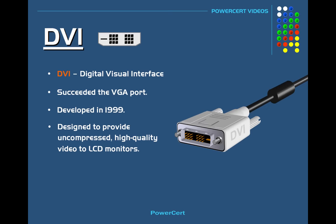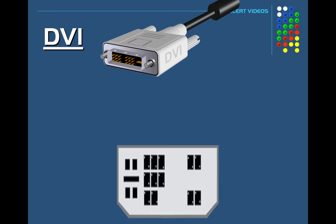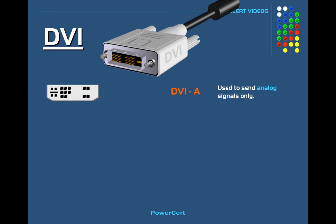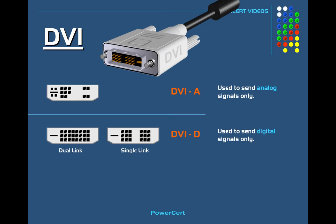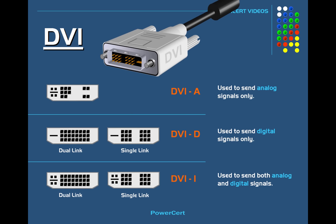There are three different versions of the DVI standard. There's DVI-A, where the A stands for analog, and this is used to send only analog signals. There's DVI-D, where the D stands for digital, and this is used to send only digital signals. And there's also DVI-I, where the I stands for integrated, and this is used to send both analog and digital signals.